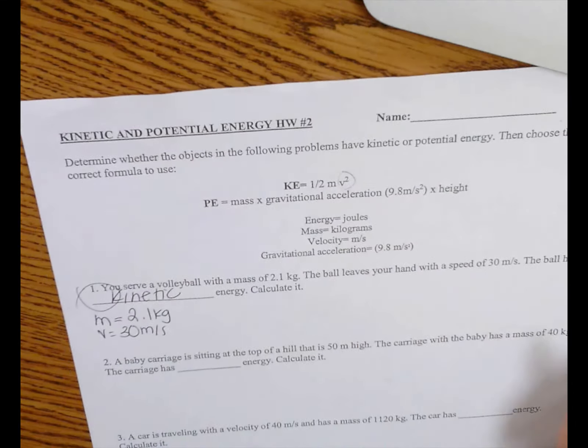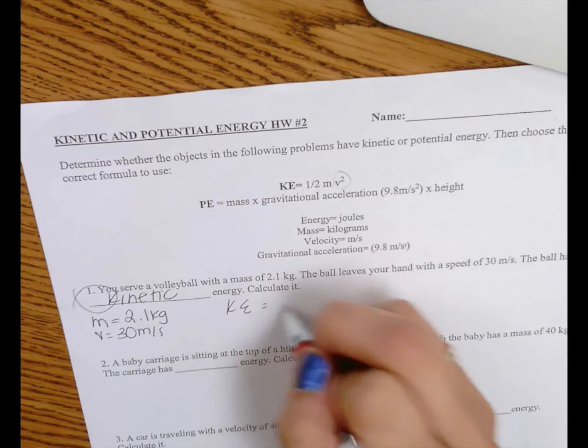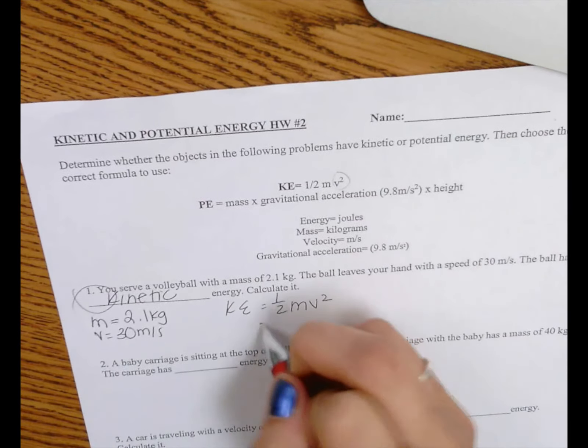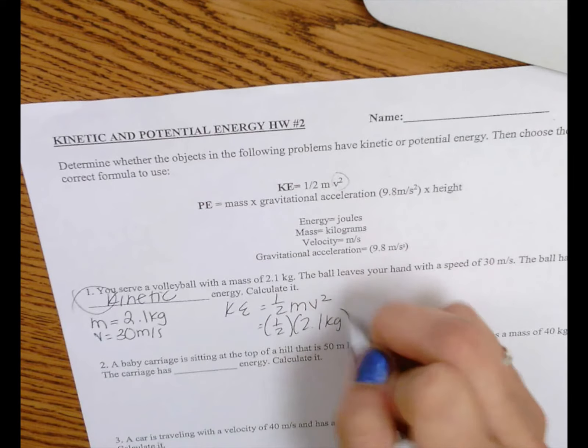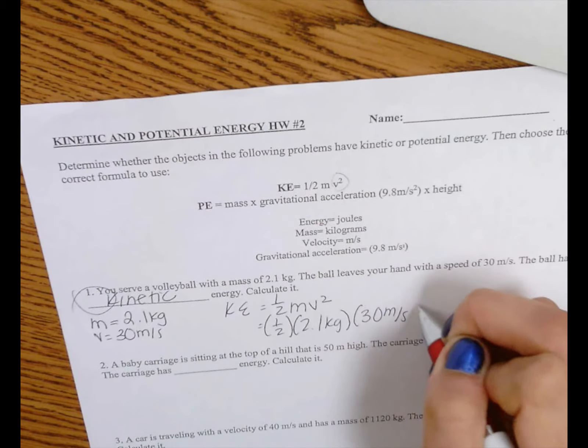So let's go ahead and solve for that, okay? We know that kinetic energy is equal to one half mass times velocity squared. So one half times the mass, which is 2.1 kilograms, times velocity, which is 30 meters per second. We got to square that. So all we have to do is we need to plug this into our calculator.